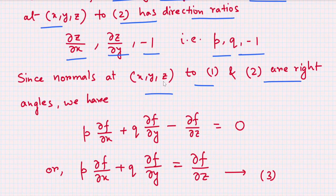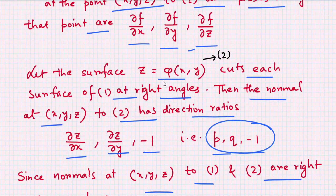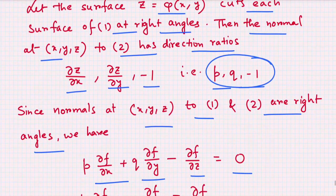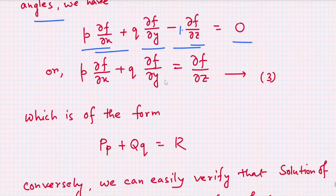Since the normals at point (x,y,z) to the two surfaces are at right angles, their dot product equals zero. This gives p·(∂f/∂x) + q·(∂f/∂y) + (−1)·(∂f/∂z) = 0, which simplifies to p·(∂f/∂x) + q·(∂f/∂y) = ∂f/∂z.